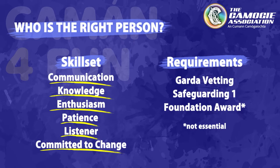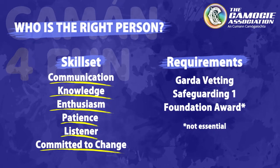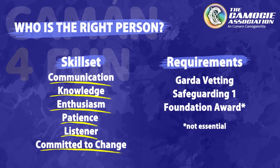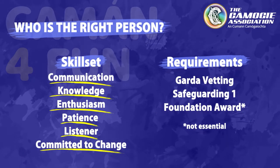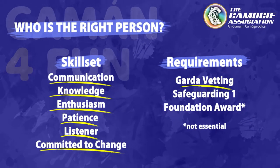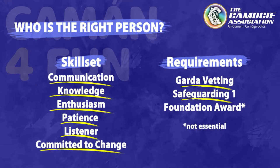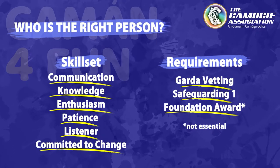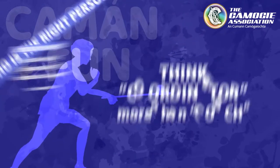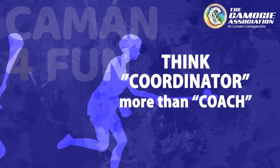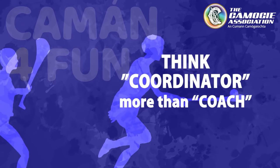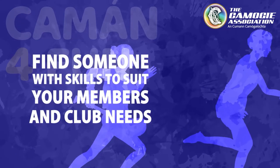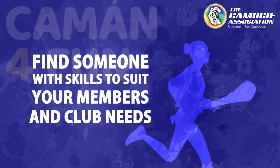New retention initiatives don't run perfectly — it's all about trial and error. As with any activity associated with underage members, anyone involved must have a valid Garda vetting and Safeguarding One course completed. Having a Foundation Coach Education Award may be an advantage, but it is not essential. Again, think coordinator more so than coach. The list of suggested attributes is not exhaustive — try to find someone with the skills to suit your members and your club needs.